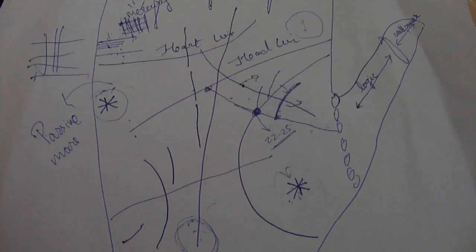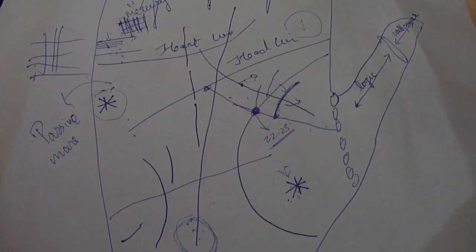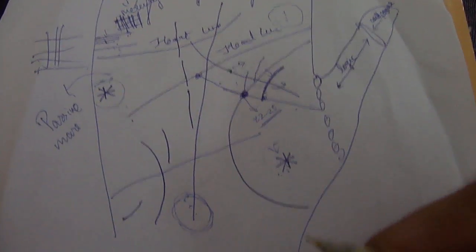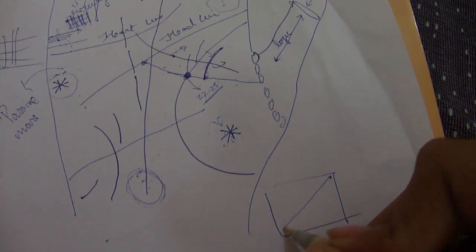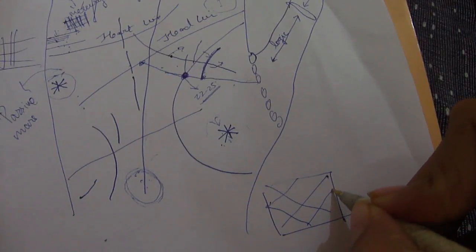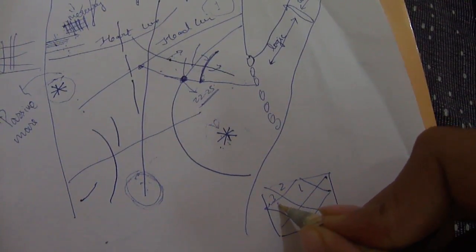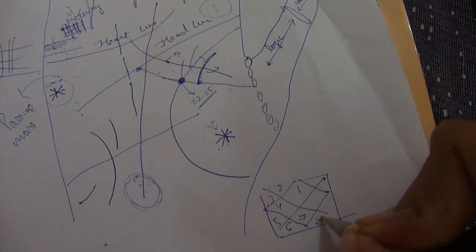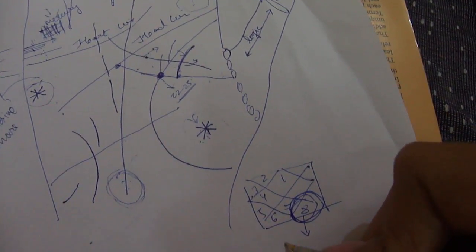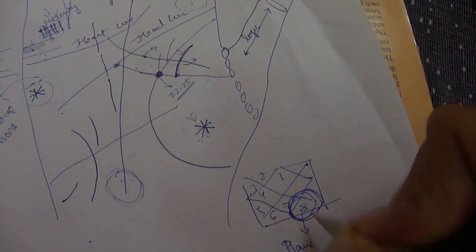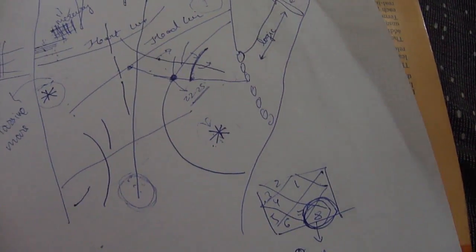...whenever I've seen the eighth house to be very strong in a person's chart - first, second, third, fourth, fifth, sixth, seventh and eighth house. When you see a very strong eighth house with a lot of planets, and the eighth house is stable and the planets are placed well, you'll see this person will have deep interest in occult sciences.